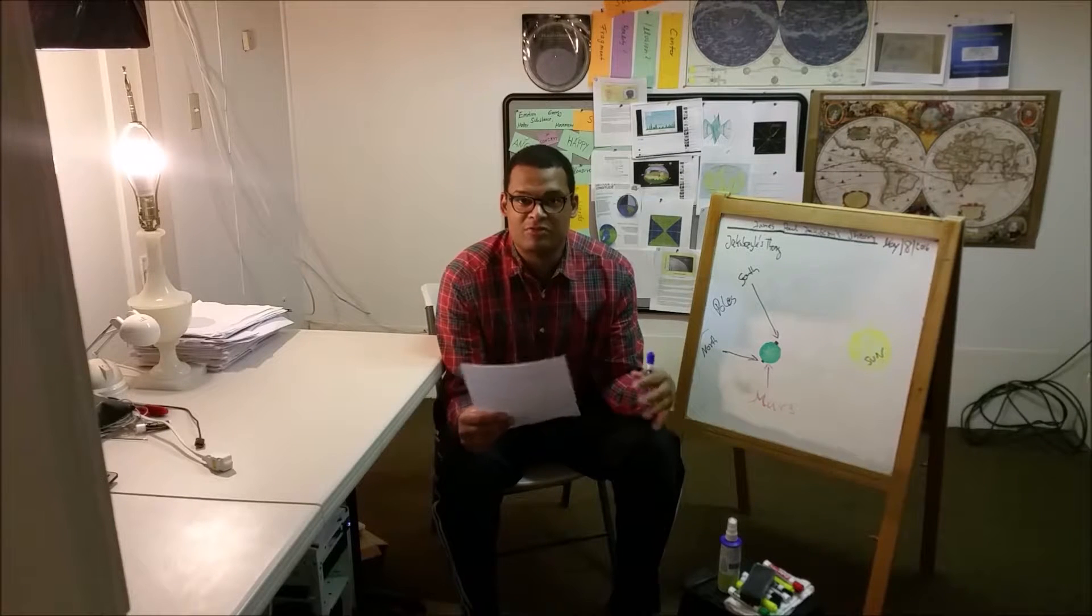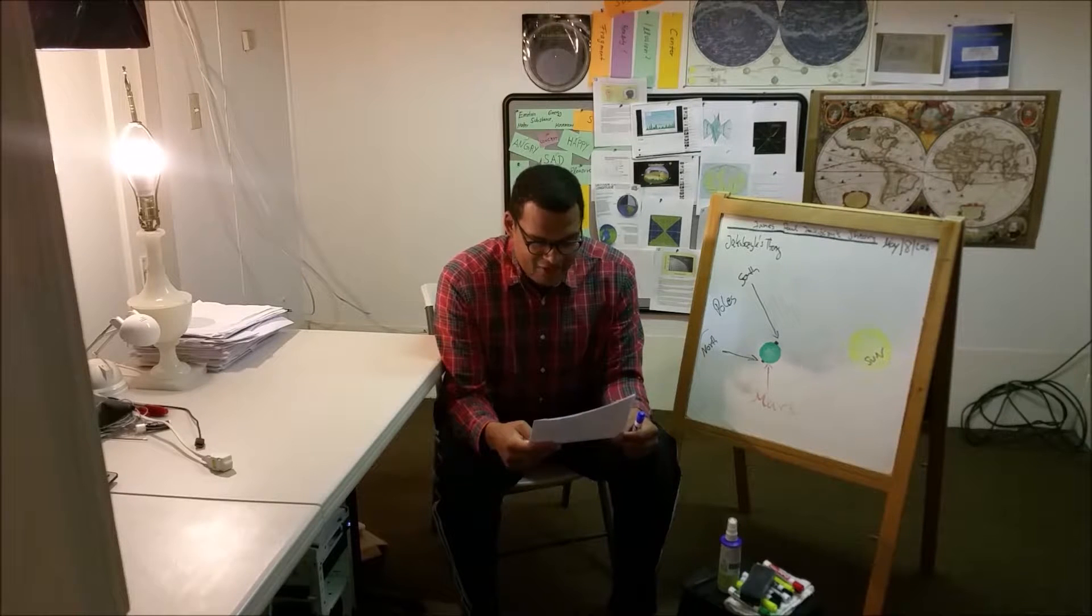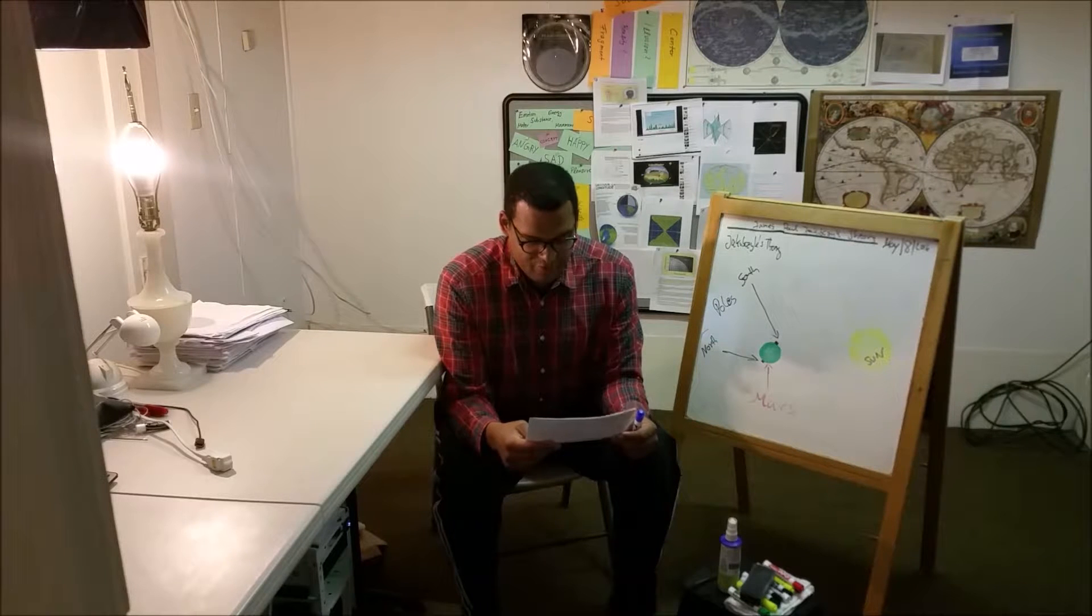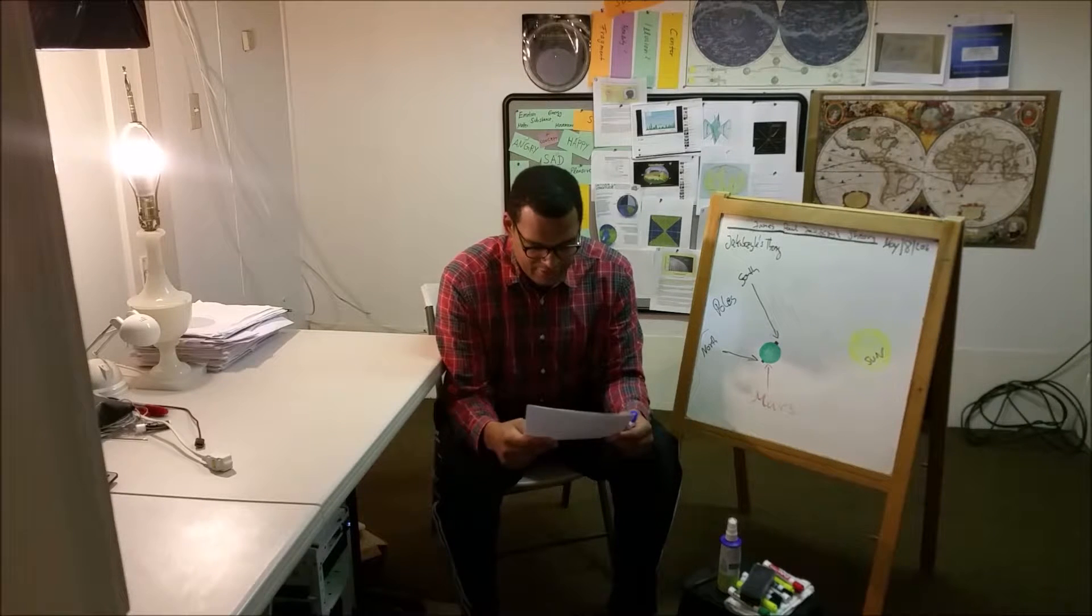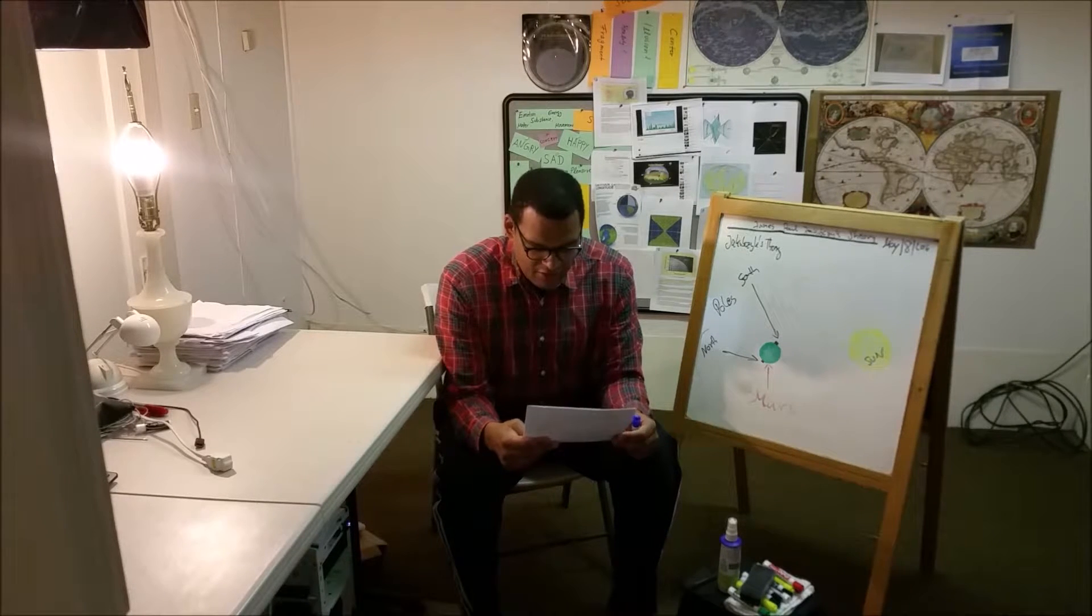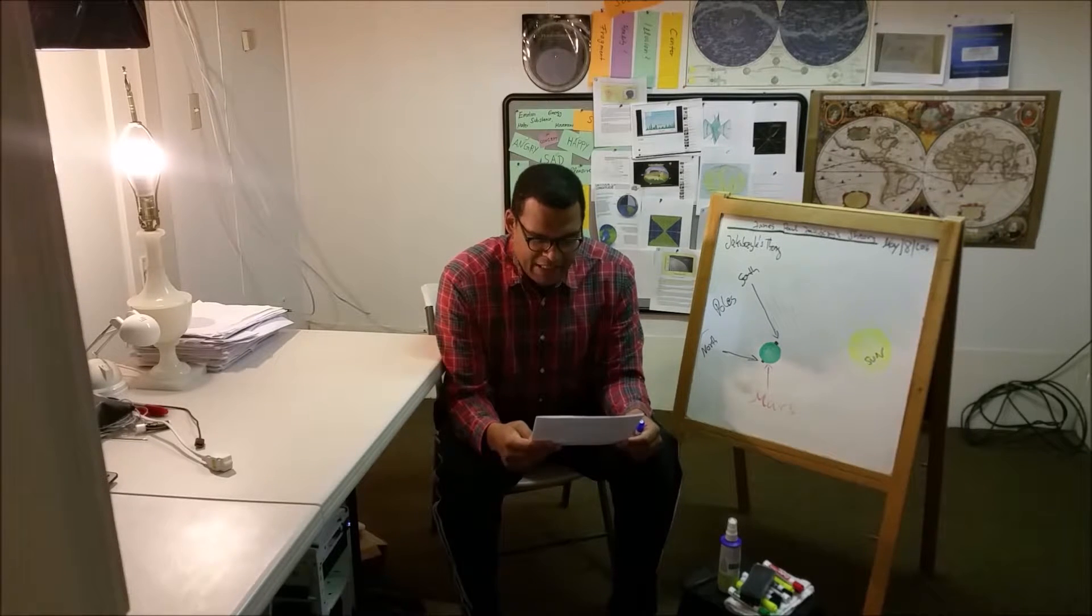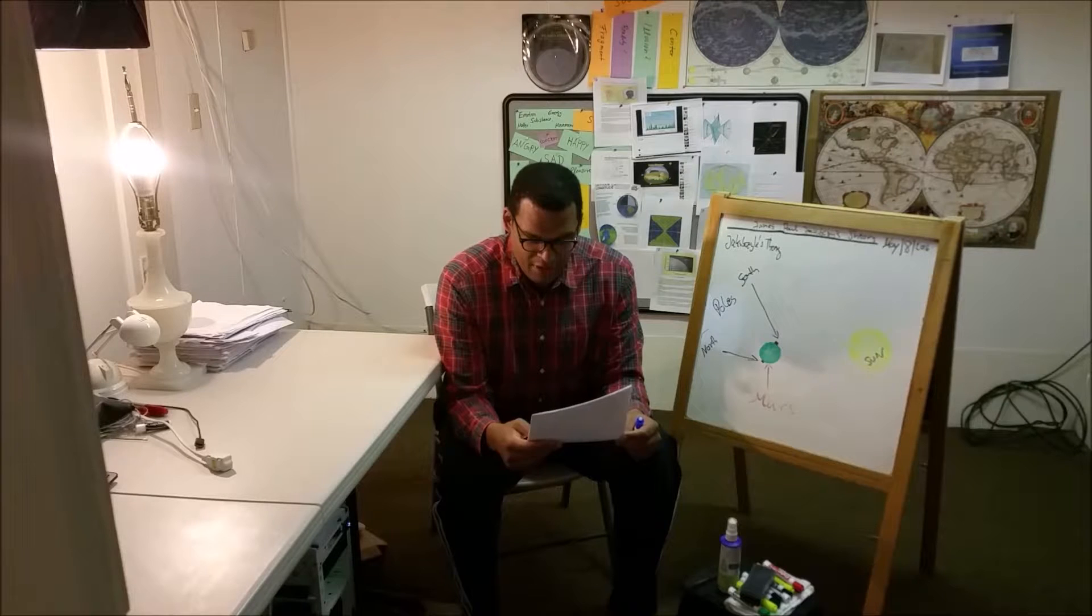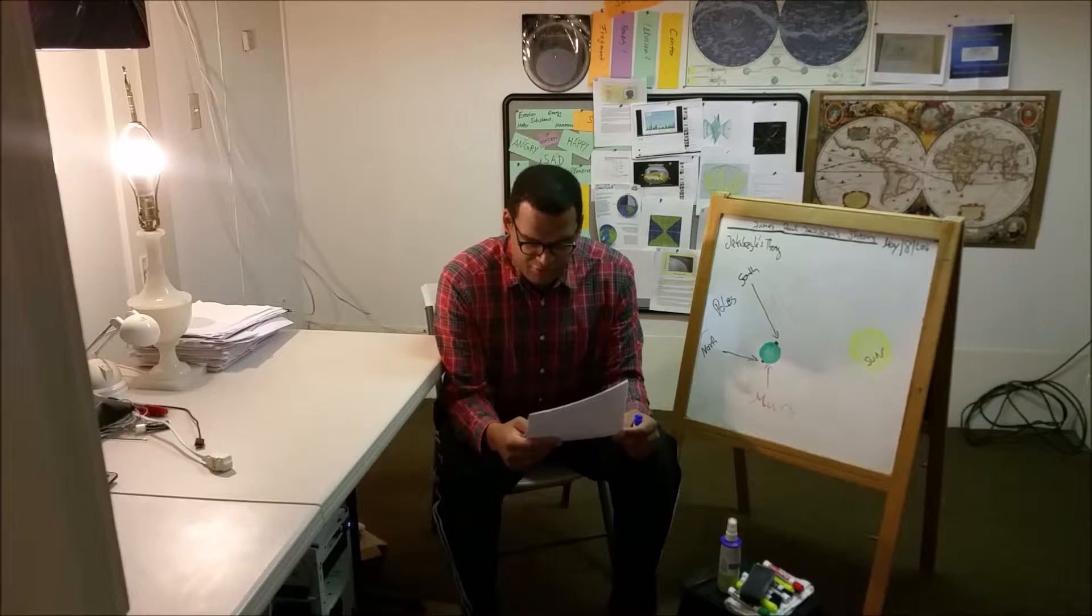He says that Mars has an incredible amount of frozen carbon dioxide. It's dry ice. Now he says if we heat it up, it sublimes directly into the atmosphere and thickens the atmosphere the same way it does on Earth. CO2 is an incredibly potent greenhouse gas.